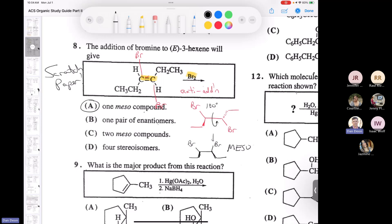So I would definitely use my scratch paper to solve a problem like this. Unless you're really astute, you can say, well, this is a trans compound. This is anti addition. So yeah, I am going to get a meso compound. If you're really sharp, yeah, that'll work, but I would always double check it.